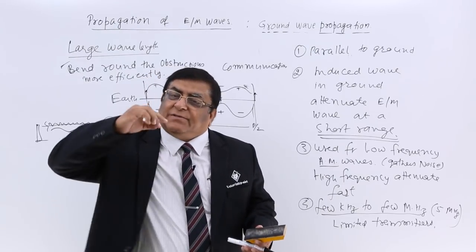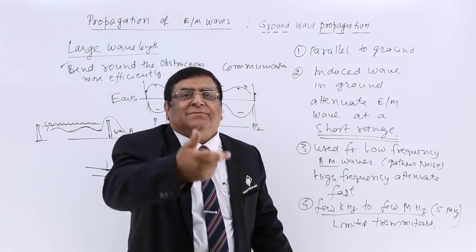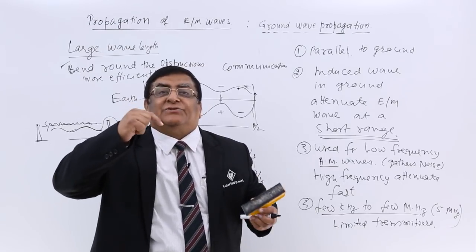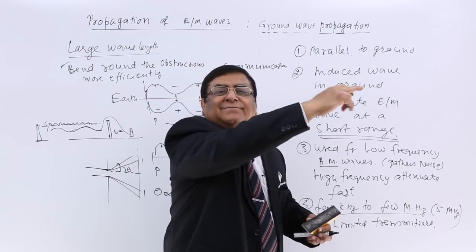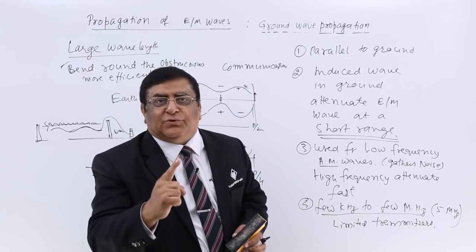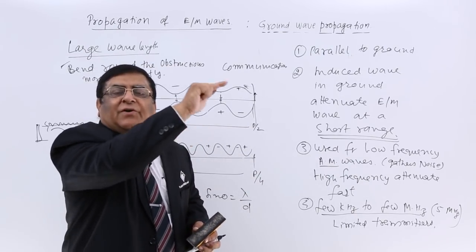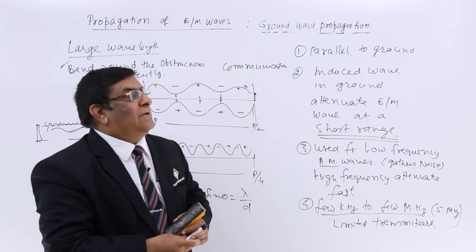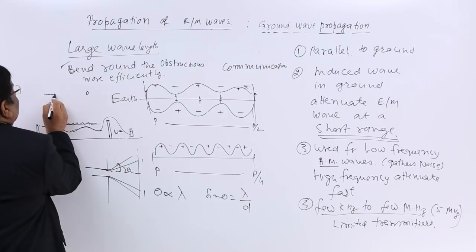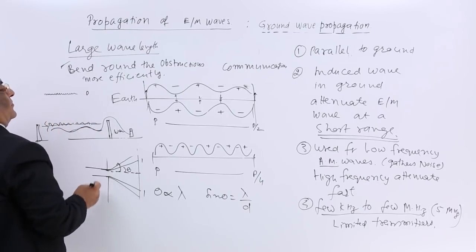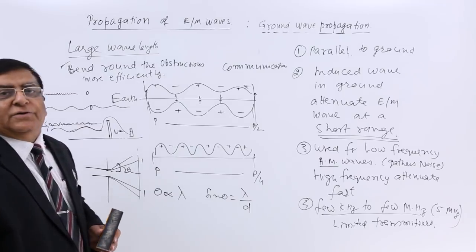Think of it this way: if you are walking with very small steps and there is a stone on the way, you are bound to strike it and stop. If you are taking large steps, you can go round the obstruction. So larger wavelength gives you freedom to cross obstructions, while smaller wavelength means you cannot cross even a very small obstruction.